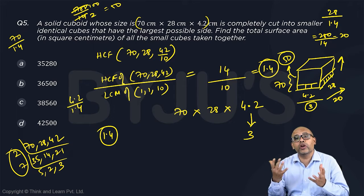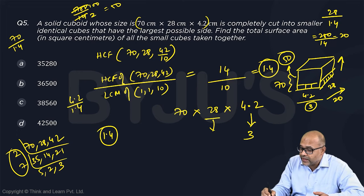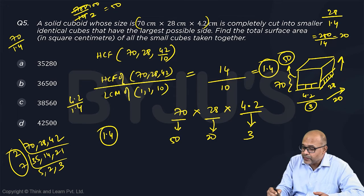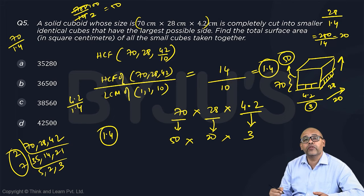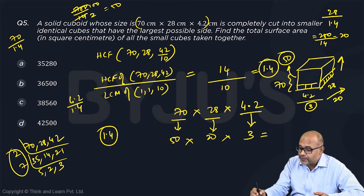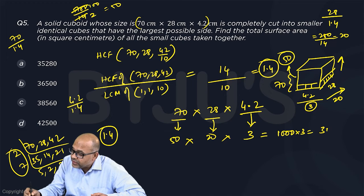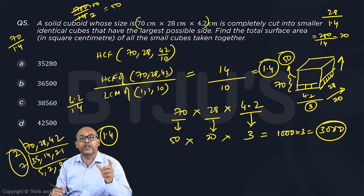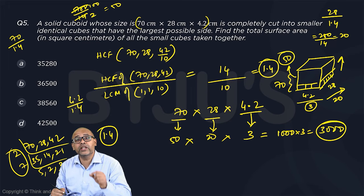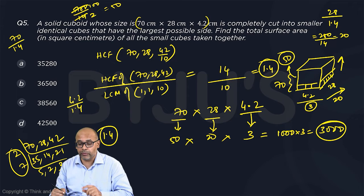So total number of small cuboids that you got are, this gave you, so this gave you 3, this gave you 20 and this will give you 50. So the total quantity you get is 50 into 20 into 3, which is 50 into 20 is 10,000. This is 1000 into 3, which is 3000 number of units that you get. Each one is 1.4 into 1.4 into 1.4.